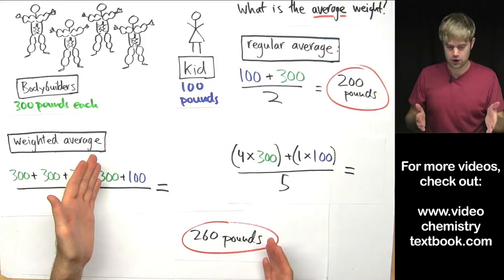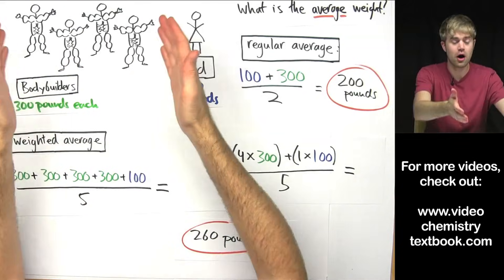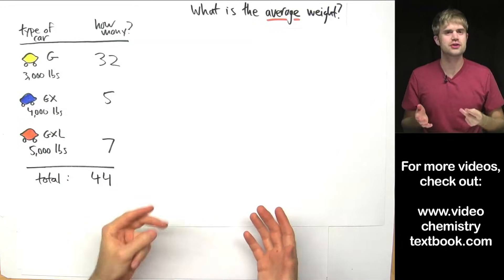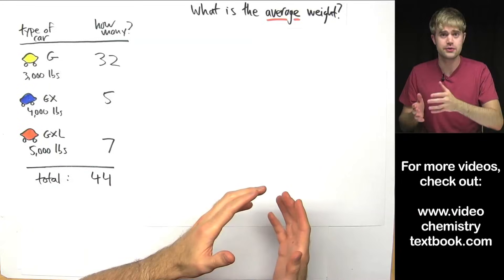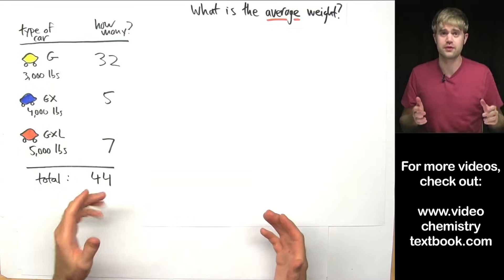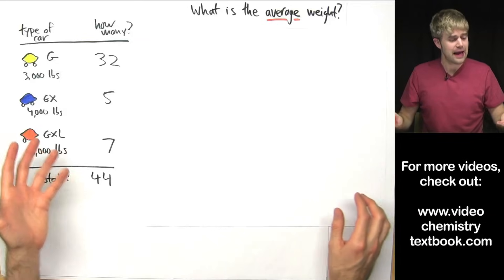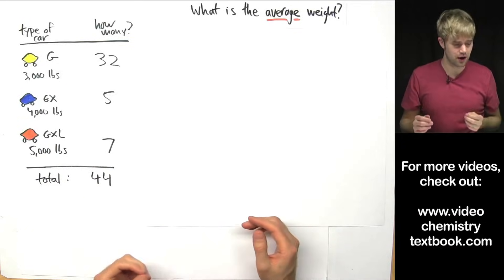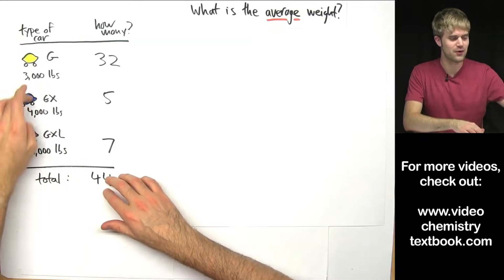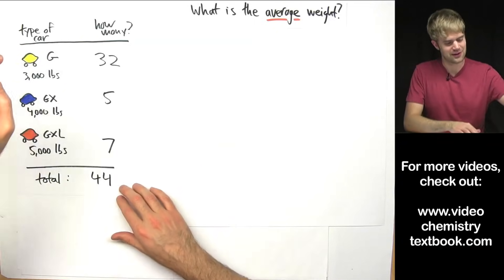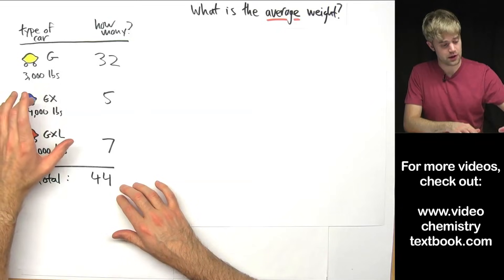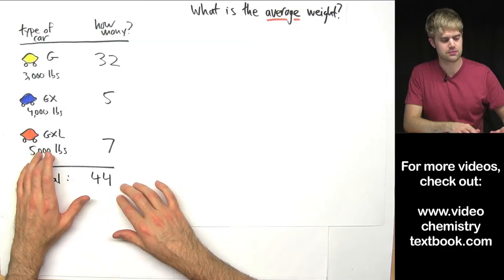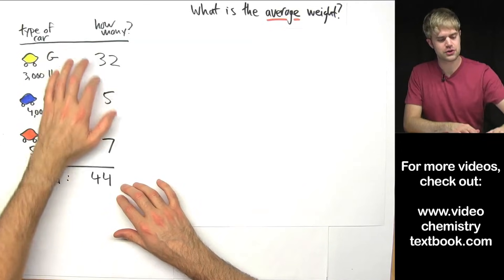So the weighted average should be closer to the weight of what we have more of. Also, a weighted average doesn't have to involve just two types of things — we can have more than two. Here's an example: a parking lot with three different kinds of cars, all called Lamonas. The Lamona G weighs 3,000 pounds, the Lamona GX weighs 4,000 pounds, and the Lamona GXL weighs 5,000 pounds, and we have different amounts of each.